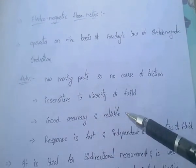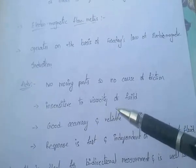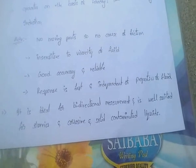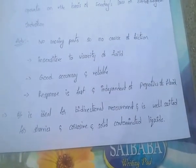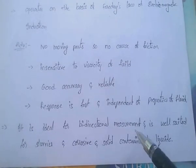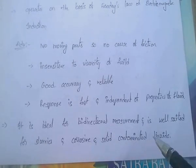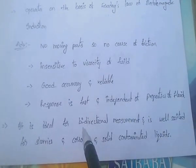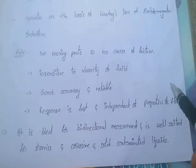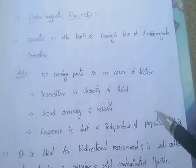Electromagnetic flow meters have good accuracy and are very reliable with a fast response. They are independent of the properties of the fluid. They are ideal for bi-directional measurement — whether the fluid flows in one direction or the other, it can be easily measured. They are also well-suited for slurries, corrosive, and solid-contaminated liquids.